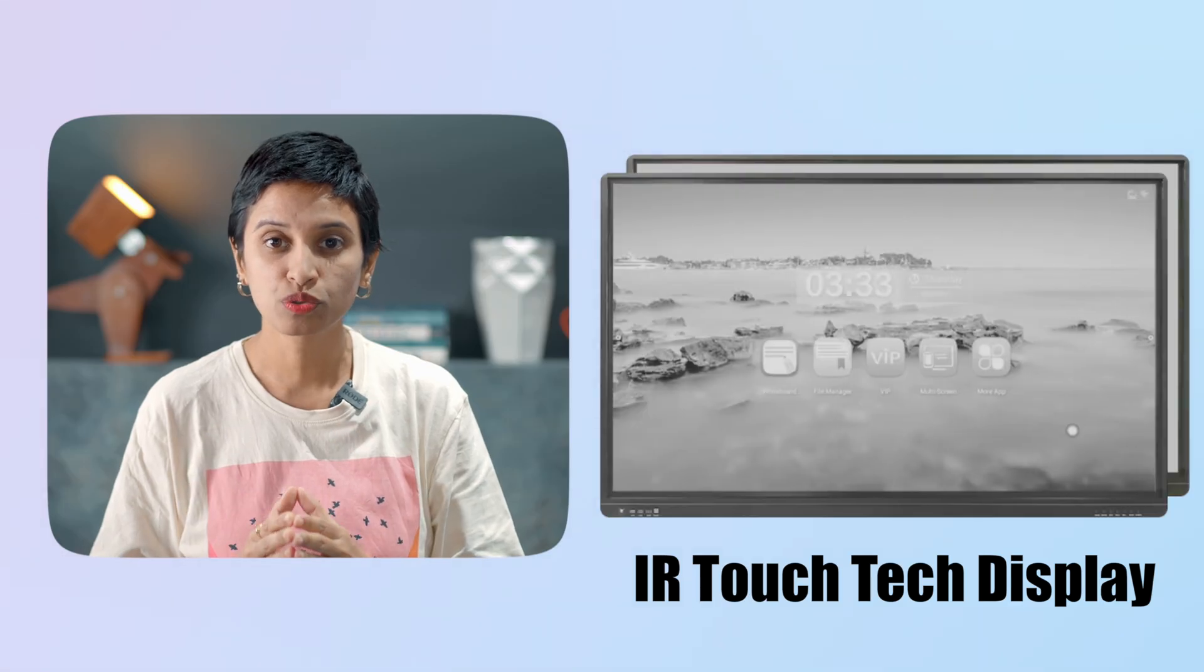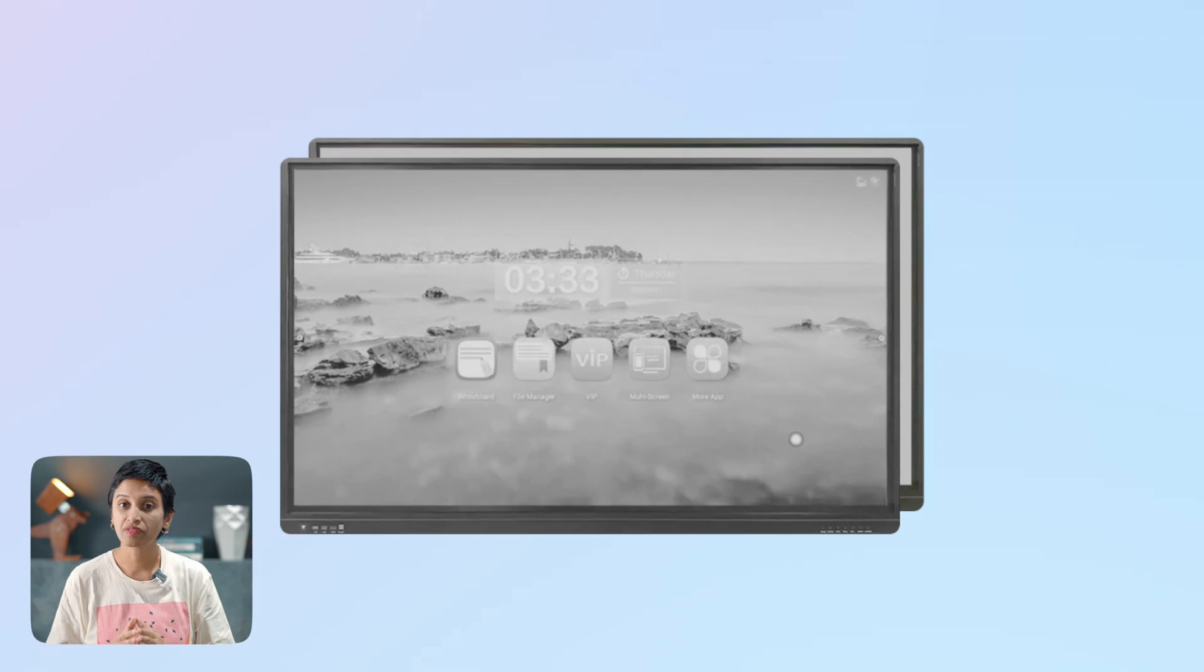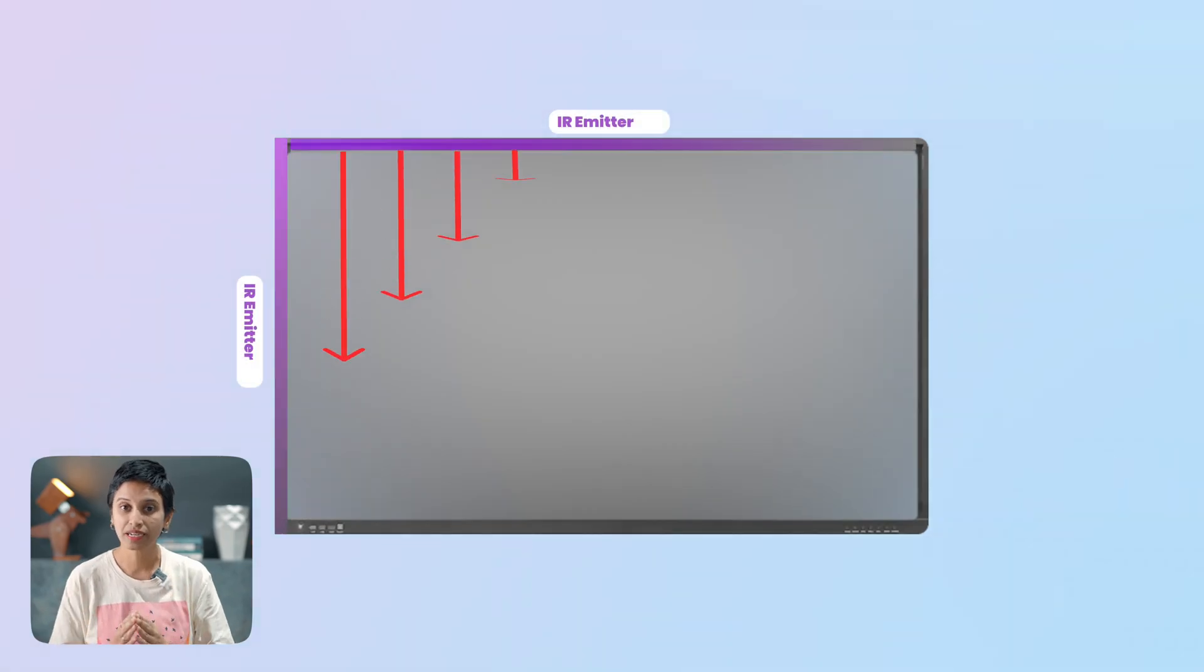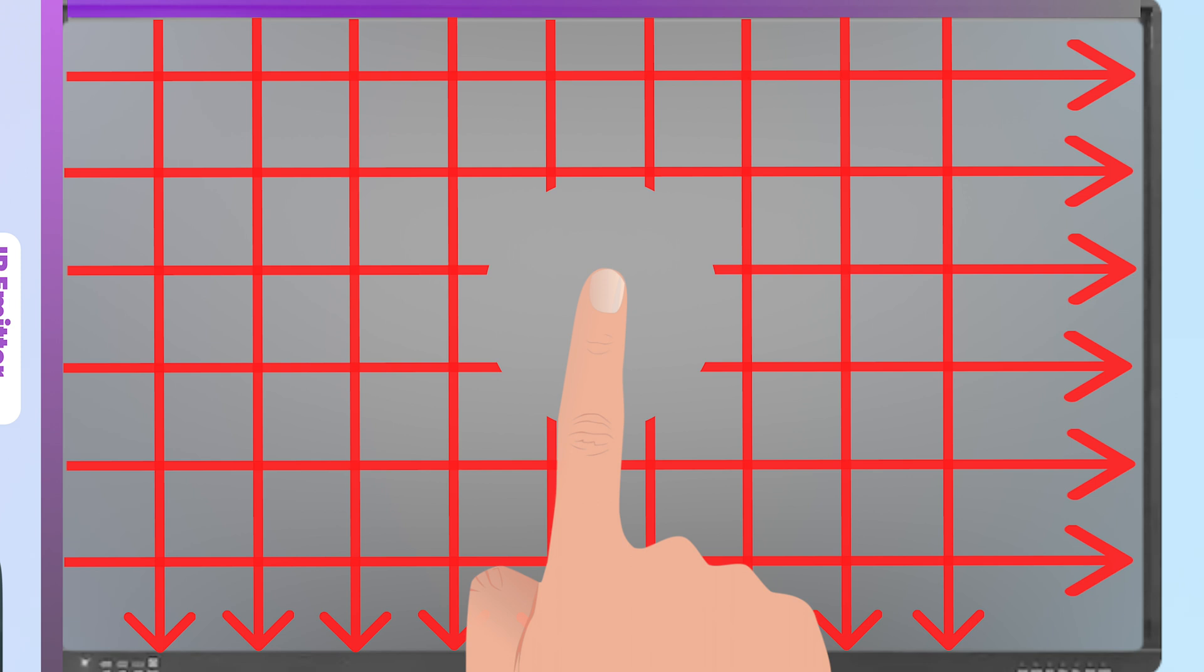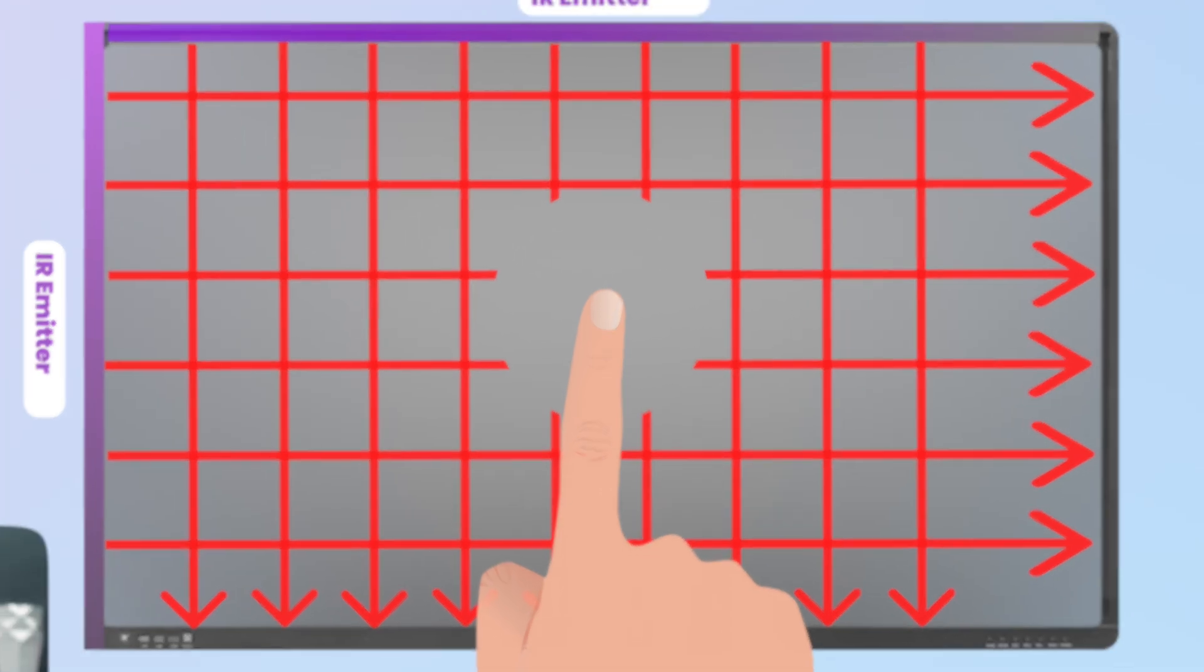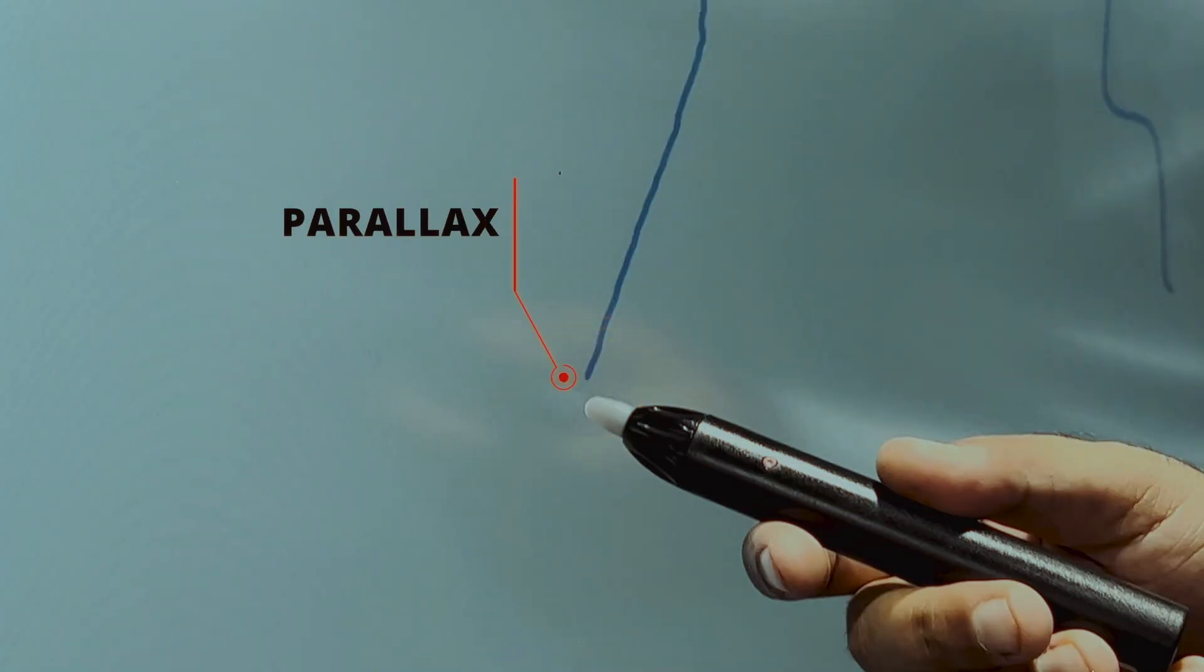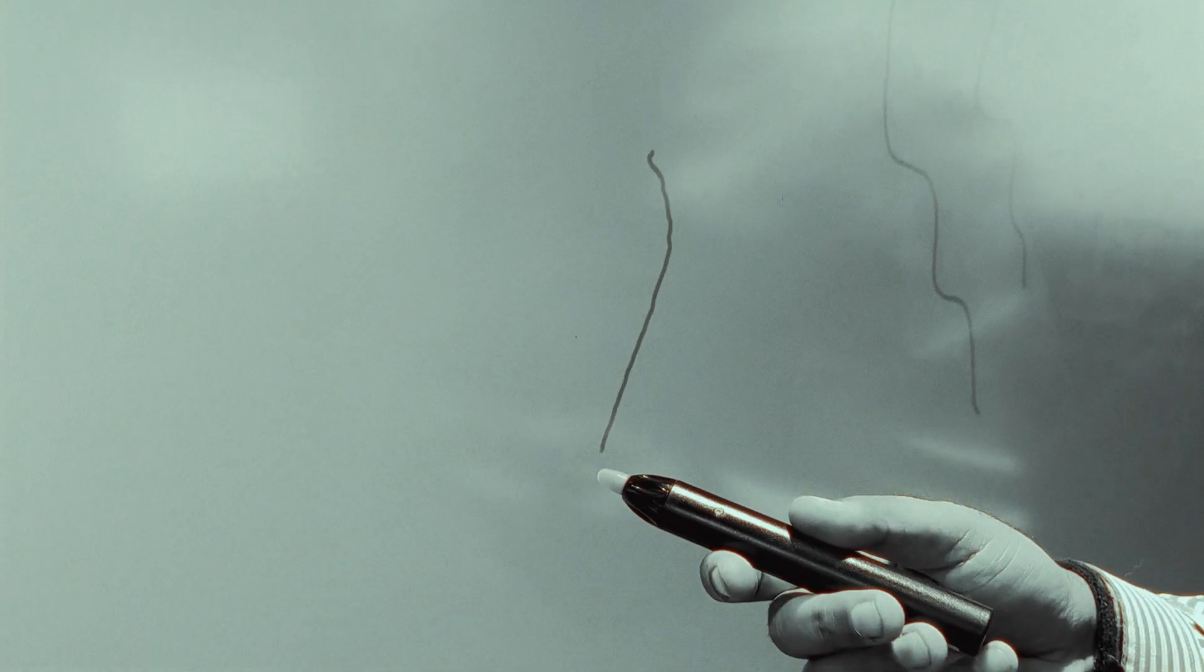The interactive displays that use IR touch technology have IR emitters on the sides that emit rays in a parallel manner. When you write on the panel, it blocks these rays and gets detected as a touch. However, the precision is often much lower, leading to a noticeable gap between the touch and the ink. This can result in a laggy experience.